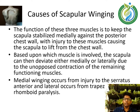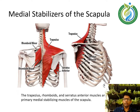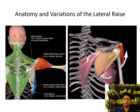Based upon which muscle is involved, the scapula can deviate either medially or laterally due to the unopposed contraction of the remaining functioning muscles. Medial winging occurs from injury to the serratus anterior, and lateral winging occurs from trapezius or rhomboid injury. In the diagram, we can see the trapezius, rhomboids, and serratus anterior muscles, which are the primary medial stabilizing muscles of the scapula.